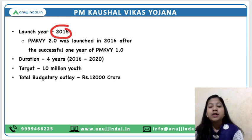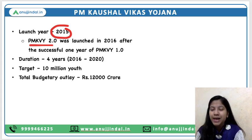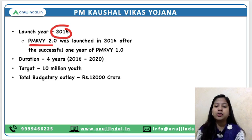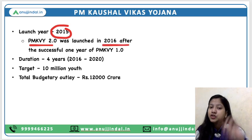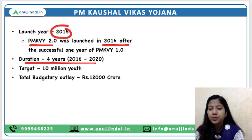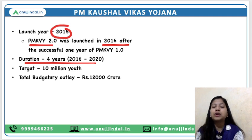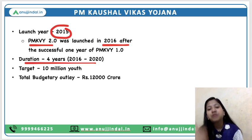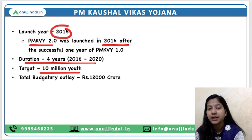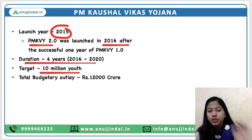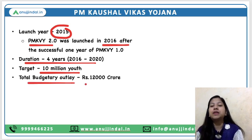The Pradhan Mantri Kaushal Vikas Yojana was launched in 2015. PMKVY 2.0 was launched in 2016, just one year after 1.0, with a duration of 4 years from 2016 to 2020. PMKVY 3.0 has also been launched. The target of the scheme was to train 10 million youth, with a budgetary outlay of 12,000 crore rupees.